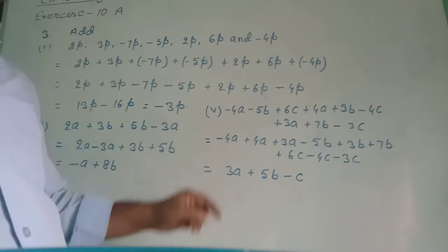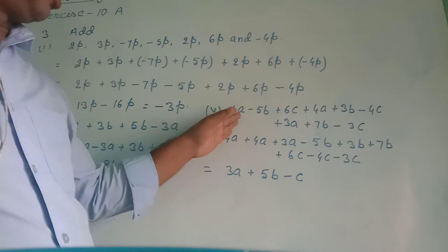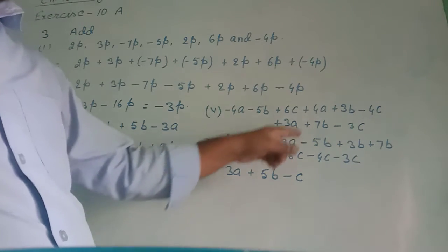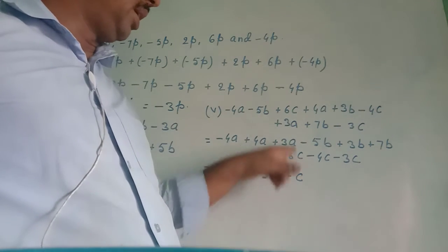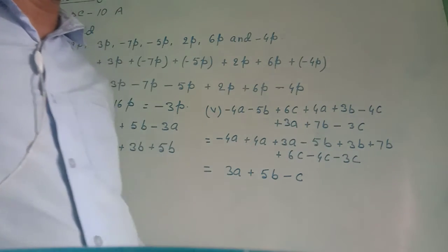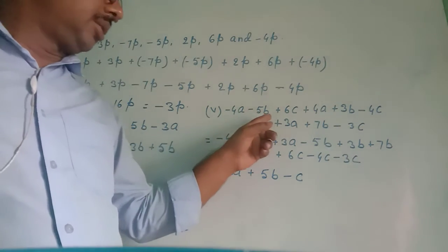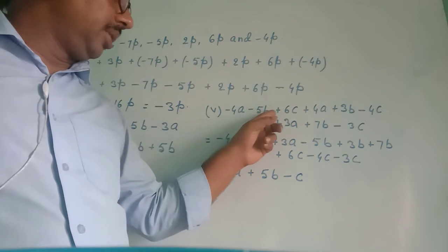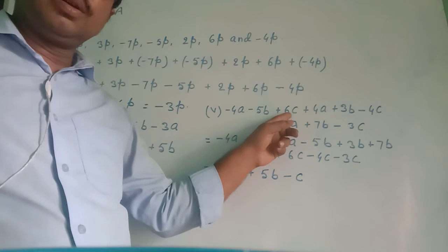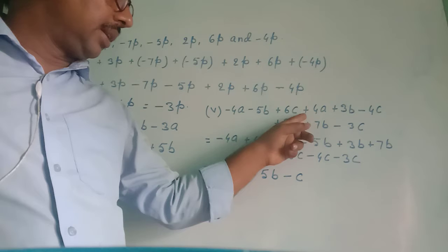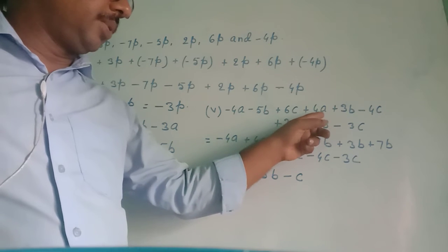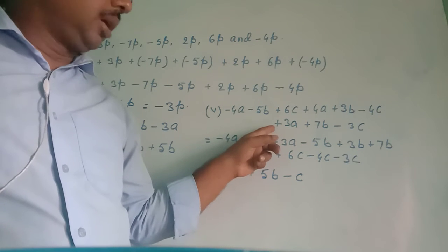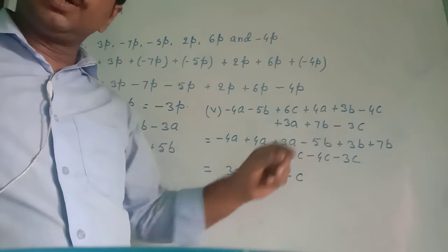Roman number 5: the algebraic expressions are 4a minus 5b plus 6c, and 4a plus 3b minus 4c, and 3a plus 7b minus 3c. We are asked to add. I wrote the given algebraic expressions with plus signs for addition: (4a minus 5b plus 6c) plus (4a plus 3b minus 4c) plus (3a plus 7b minus 3c).